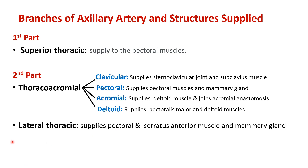The lateral thoracic artery, the second branch from the second part, supplies the pectoral muscles, the serratus anterior muscle, and the mammary gland. It runs along the lateral aspect of the pectoral region, hence it mainly supplies pectoralis major, serratus anterior — which originates from the upper ribs on the lateral chest wall — and also contributes to the mammary gland supply.